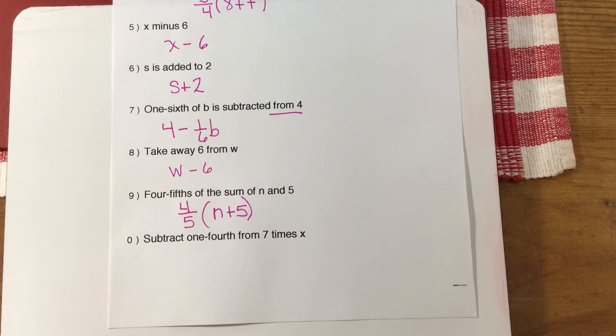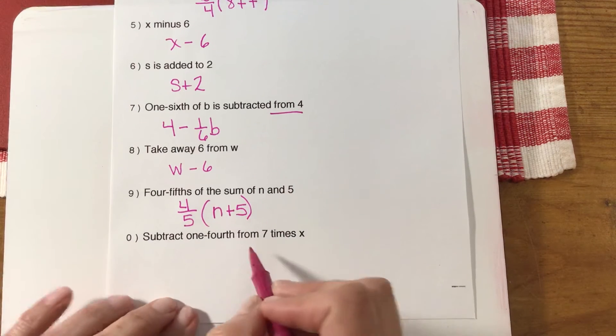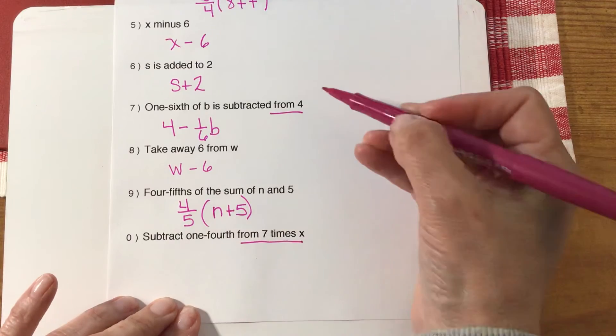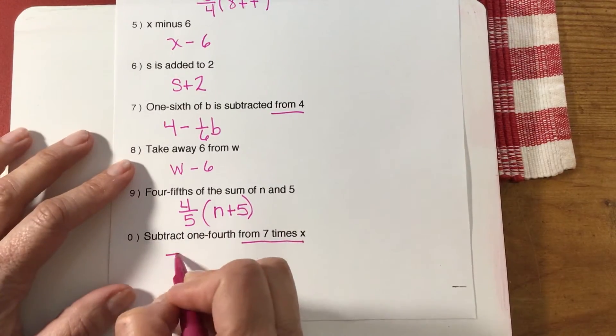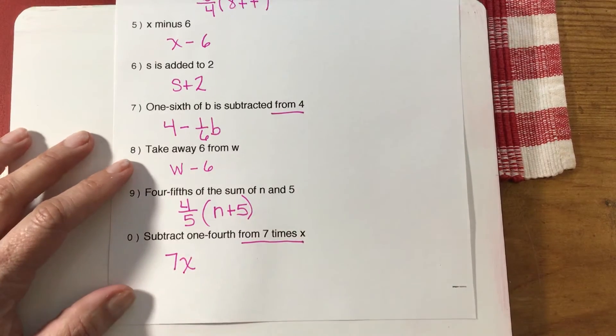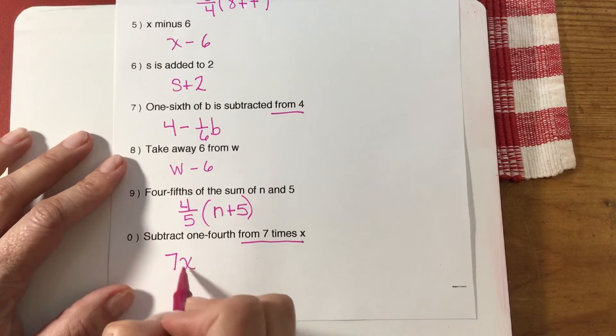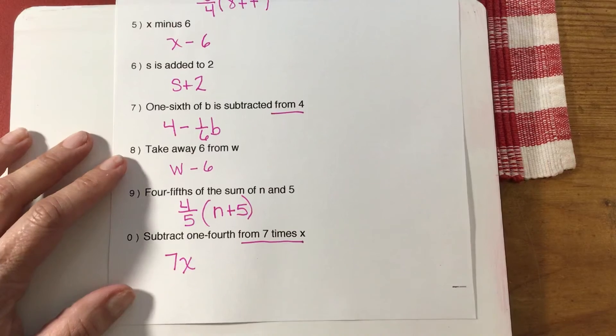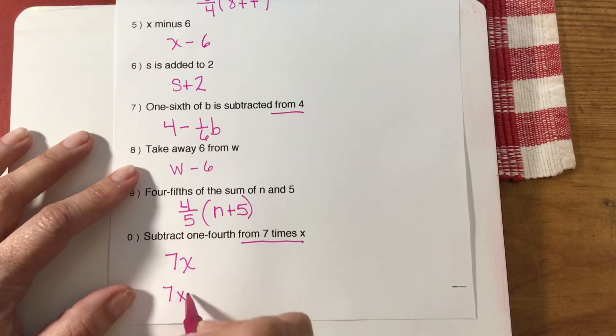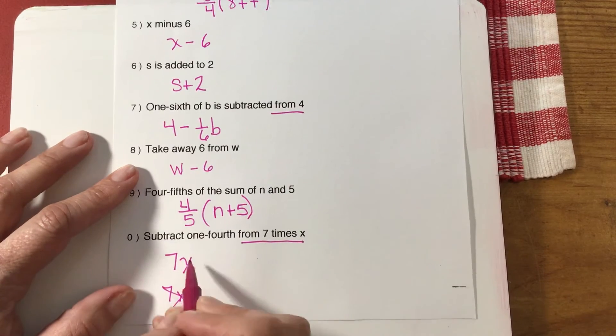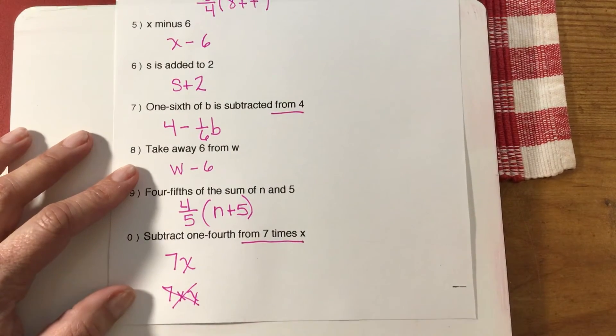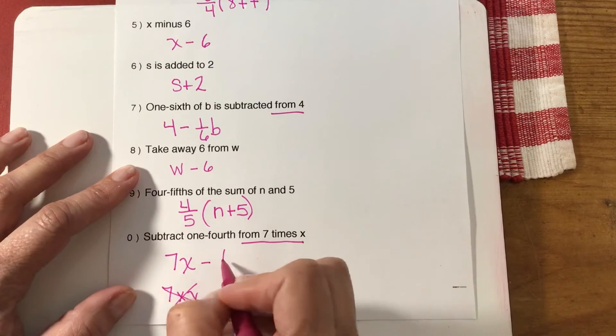Subtract one-fourth from seven times x. This is one of those tricky ones again. From seven times x, like we did up here, your seven times x needs to come first. Remember you're going to want to write it like that. You're not going to want to write it with a multiplication sign in the middle there. That would be very confusing. You're not going to know what's a multiplication and what's a variable. We want to write it this way: 7x minus one-fourth.